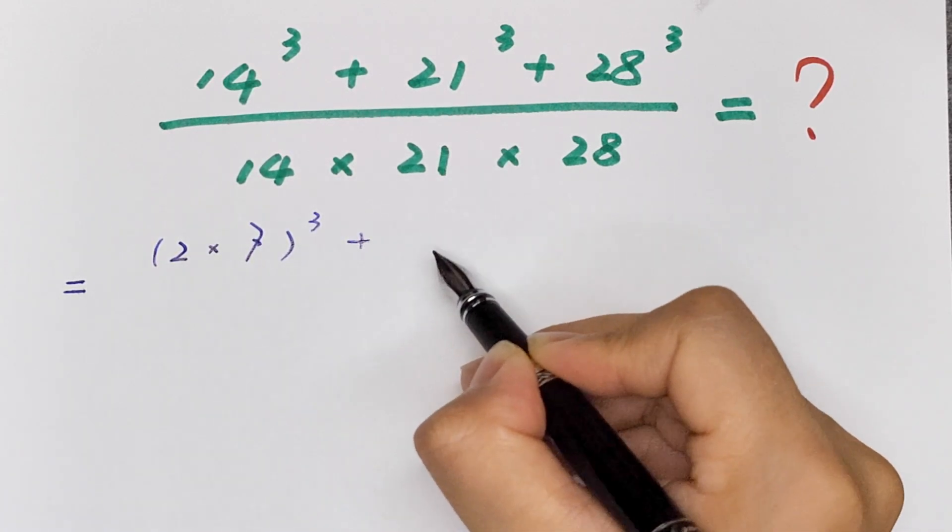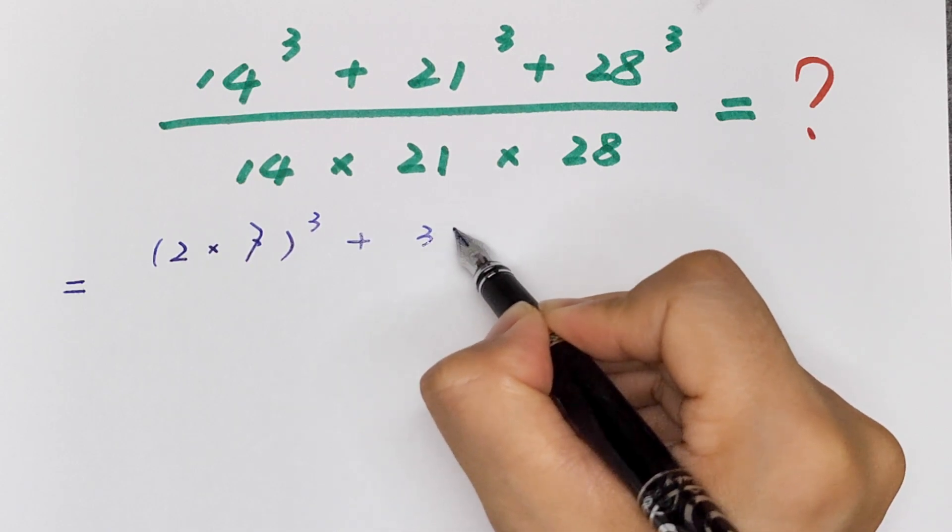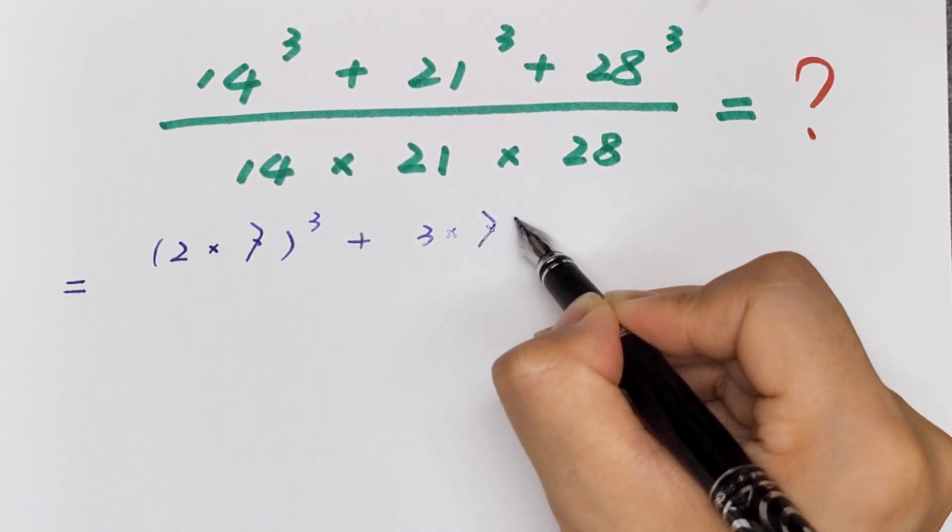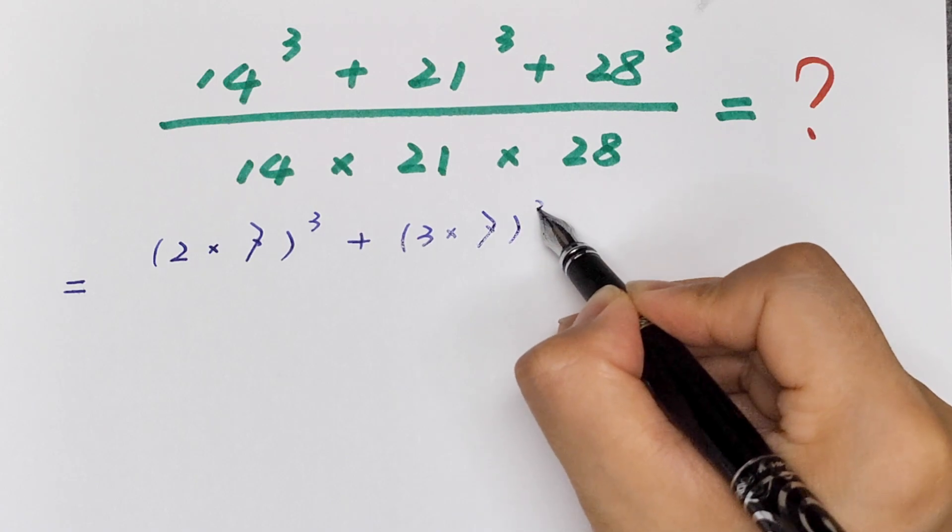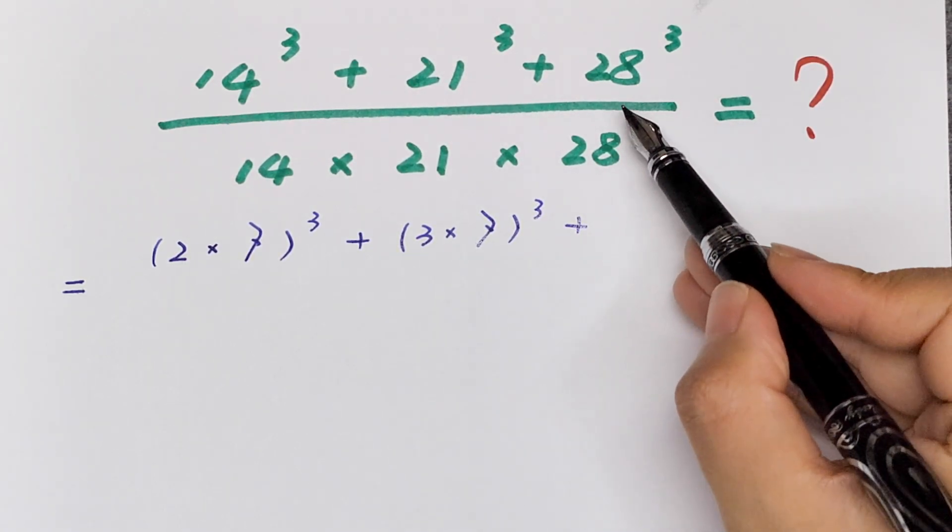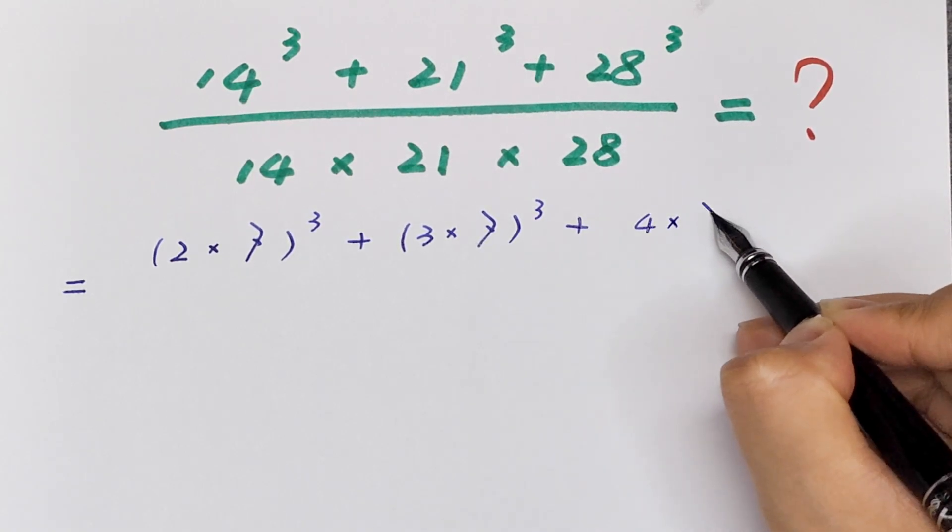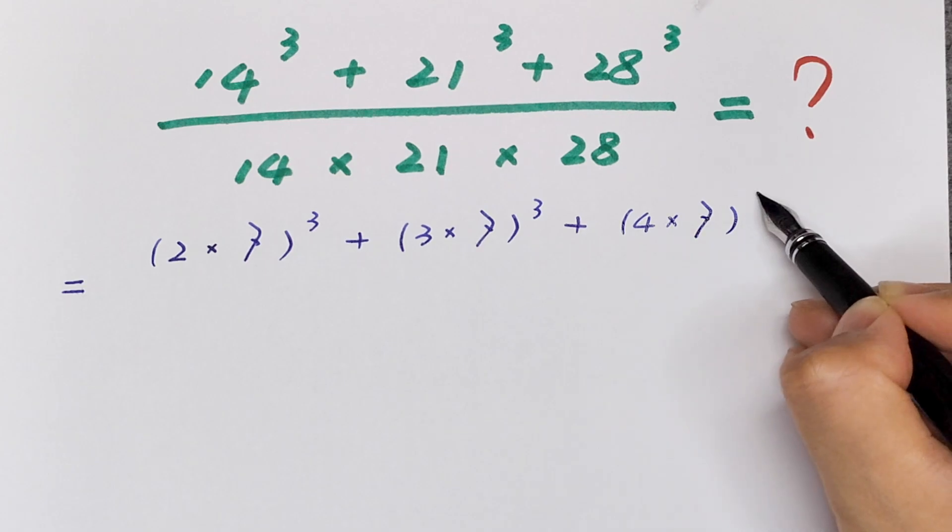Plus 21 is same as 3 × 7, bracket cubed, plus 28 is same as 4 × 7, bracket cubed.